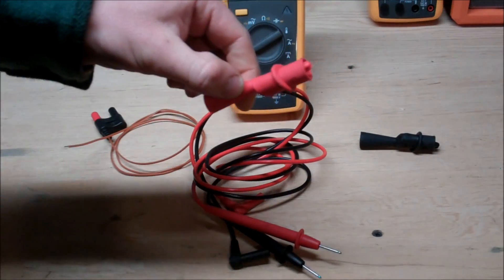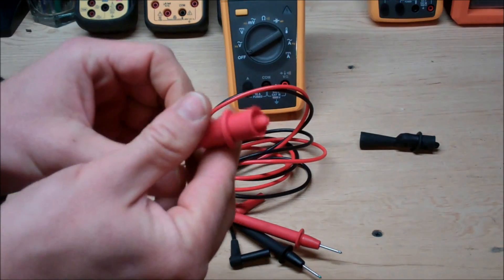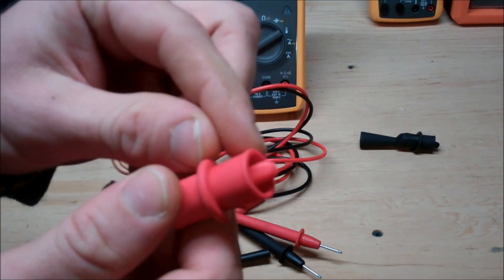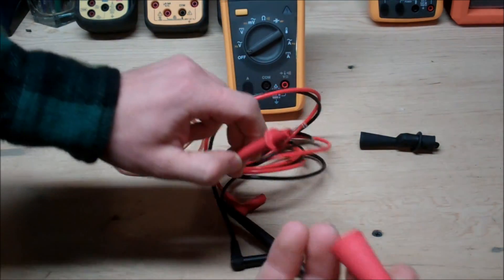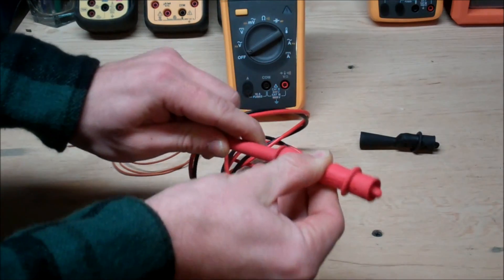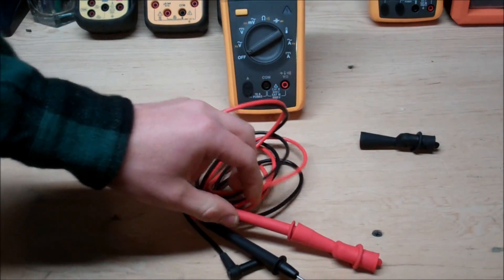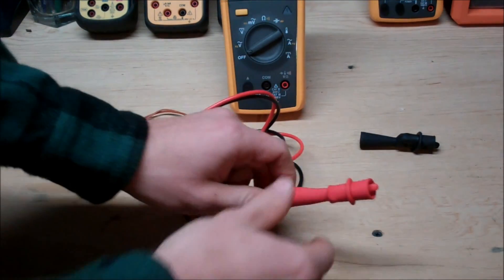And then finally these alligator clips. Fluke does an amazing job on these and why I say that is because they're really well insulated so it's going to prevent against shorts and they attach really nicely to your actual multimeter leads. So it's just a really well thought out tool right there.